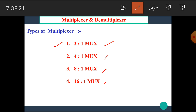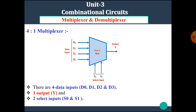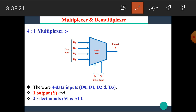Now let's consider the 4-to-1 multiplexer. The block diagram for the 4-to-1 multiplexer shows four data inputs D0, D1, D2, D3, one output, and two select inputs S0 and S1.